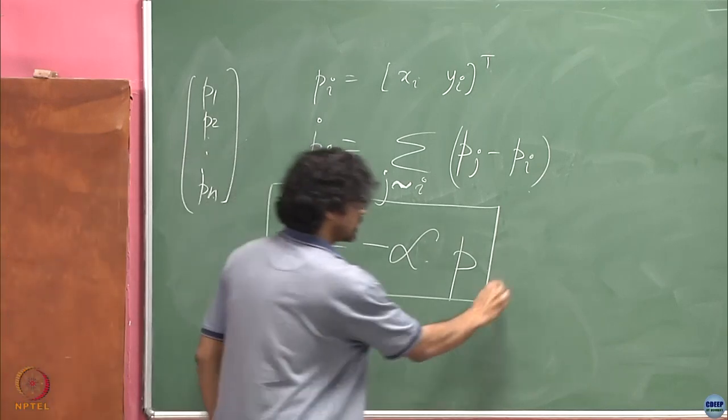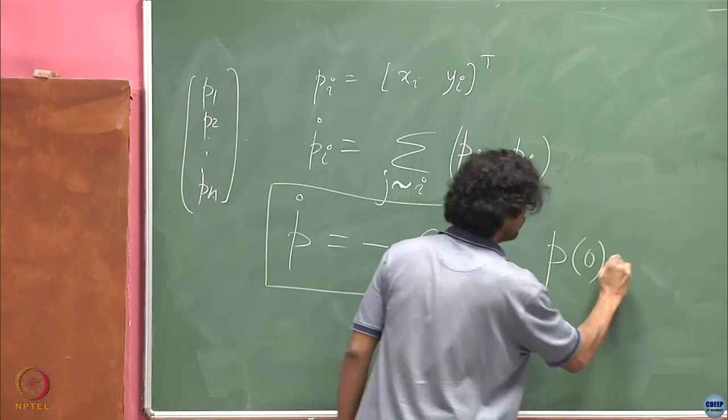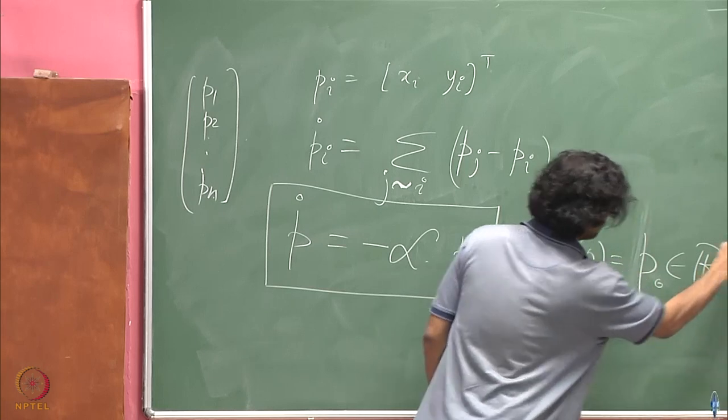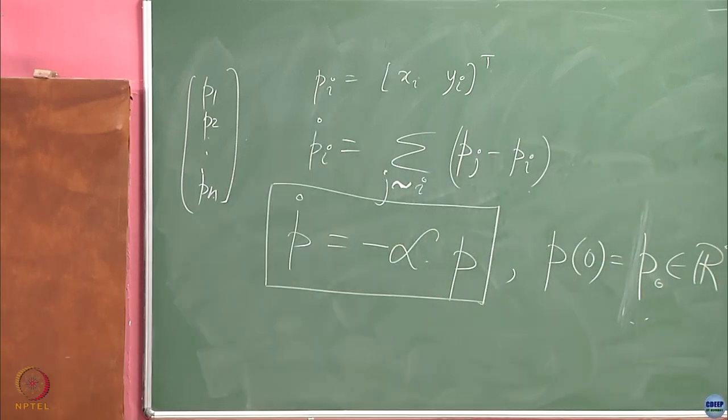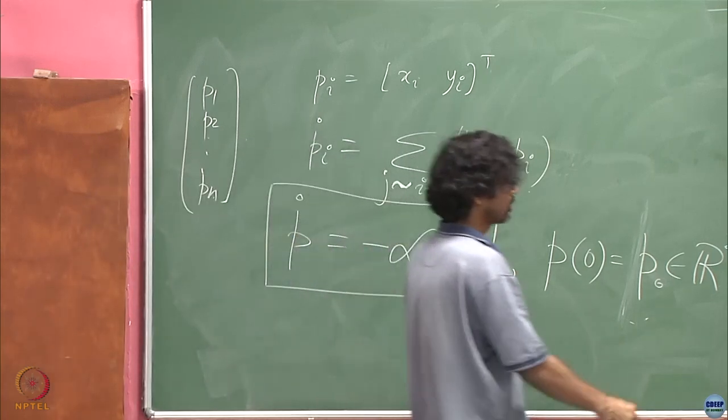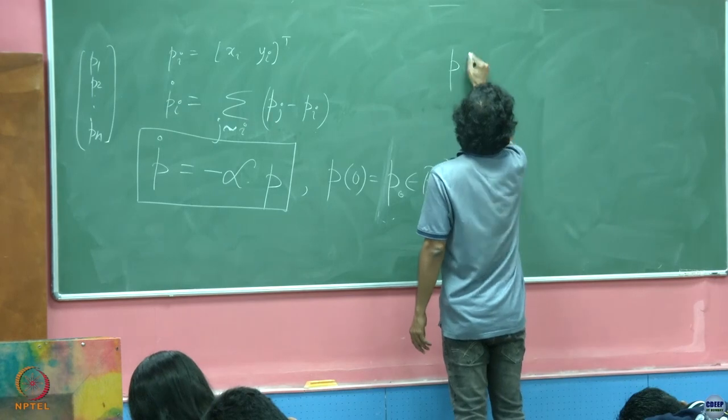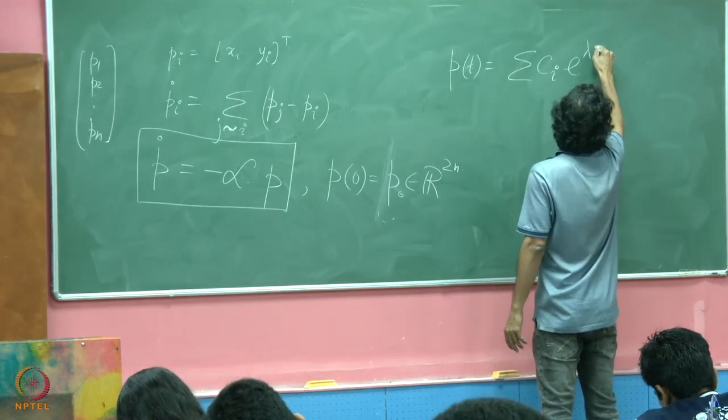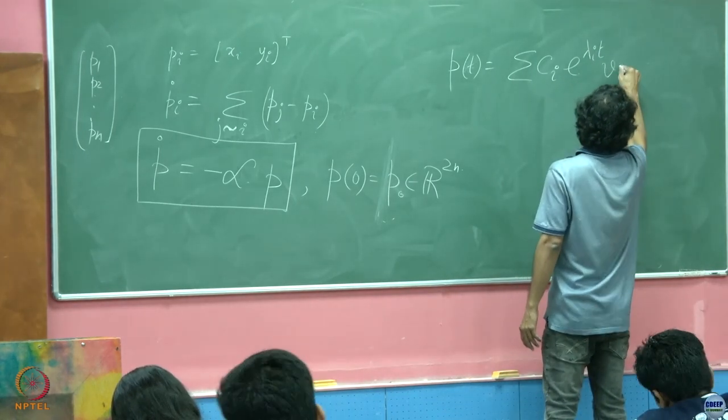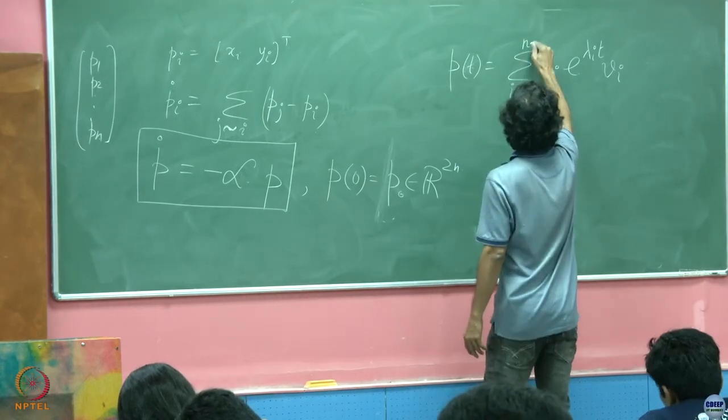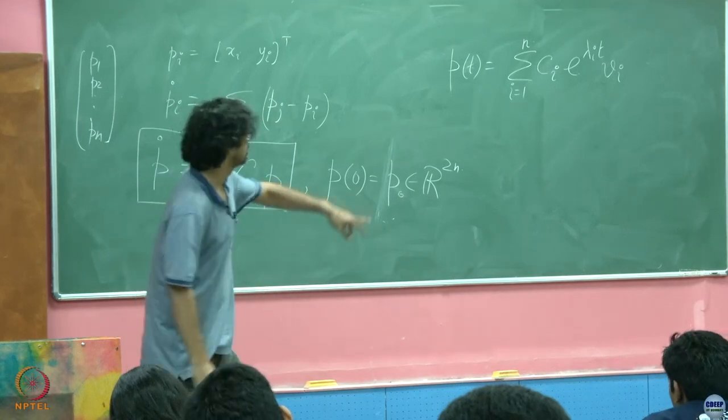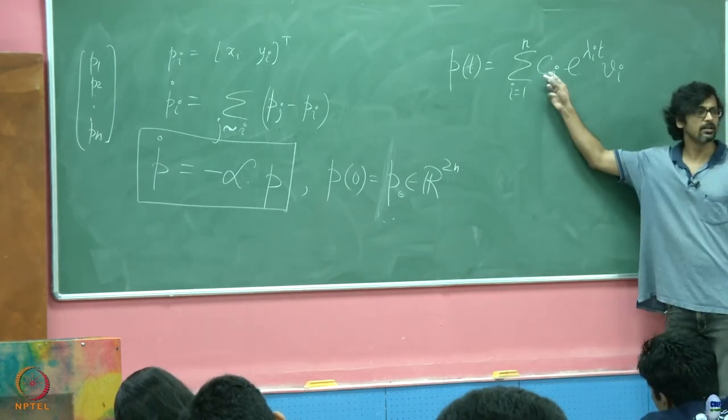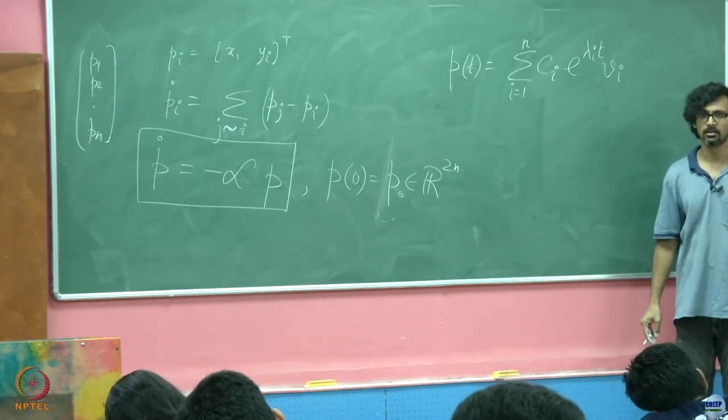Now if I solve this differential equation subject to my initial conditions p_0, let's just call it some p_0 belonging to R^{2n}. What do you think is the solution of this going to look like? Isn't it p(t) equal to summation c_i e^{lambda_i t} v_i, i going from 1 through n, where lambda_i are the eigenvalues of the Laplacian, v_i are the eigenvectors of the Laplacian. This is just linear differential equations, theory of linear differential equations.